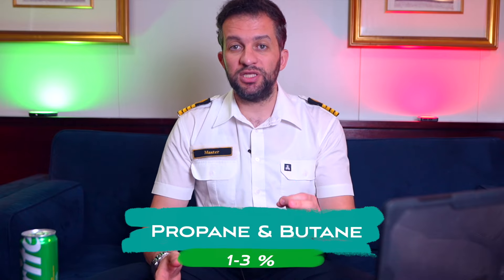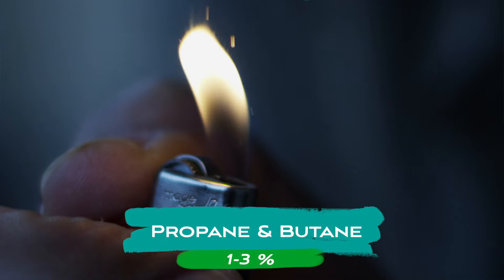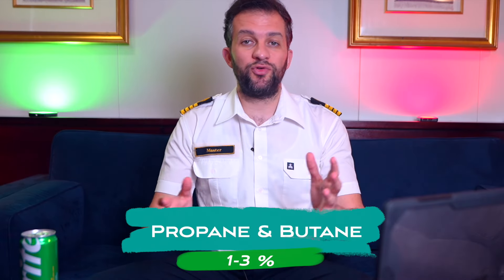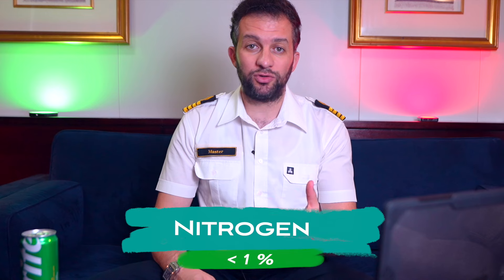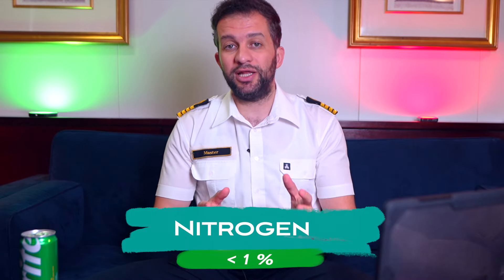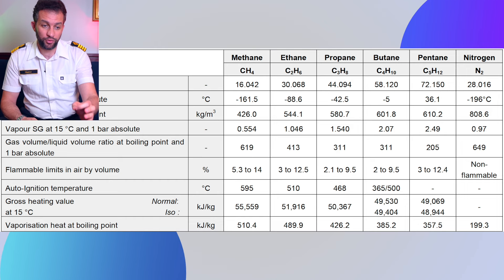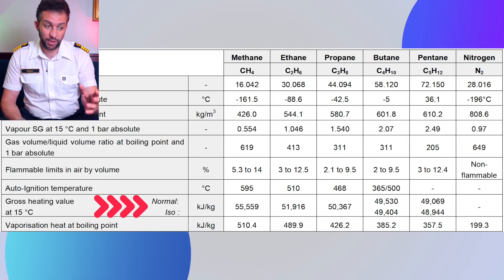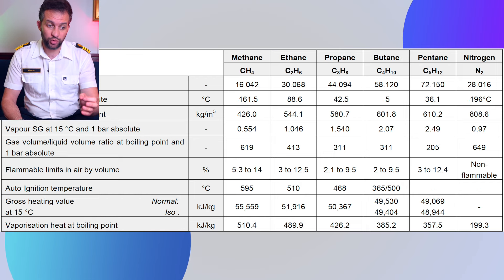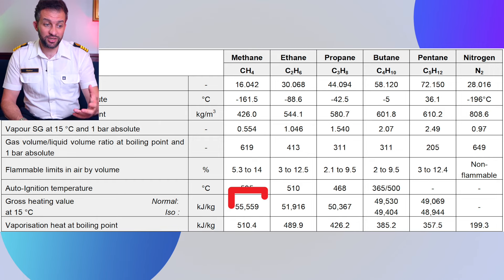Next, we have propane and butane. These are often used as fuels themselves — think propane tanks for your barbecue or butane lighters. In LNG, they make up around 1 to 3% each. Lastly, there is a small amount of nitrogen, usually less than 1%. Nitrogen doesn't burn, so it doesn't contribute to the energy content. In this table, we can see the different components, and we'll focus on the row showing gross heating value in kilojoules per kilogram — a metric unit describing the heat released on combustion of 1 kilogram. Methane delivers more energy than the other components, whereas nitrogen does not even burn.